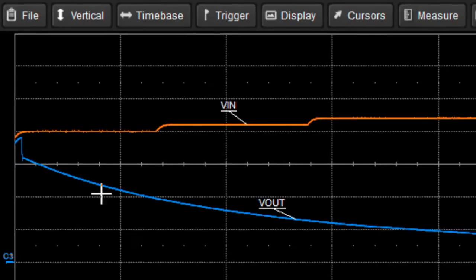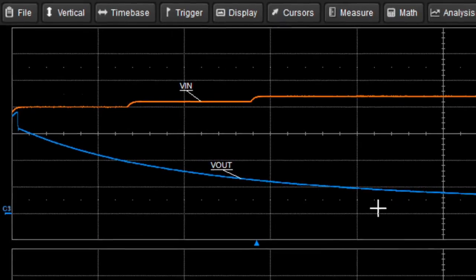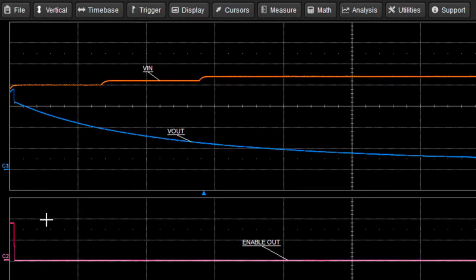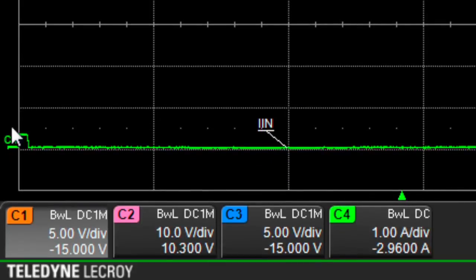So the blue trace is the output voltage from the protection network slowly discharging because we've disabled the switching mode power supply, as you can see in this pink trace, and right at the very beginning, you can see that input current went down to zero.